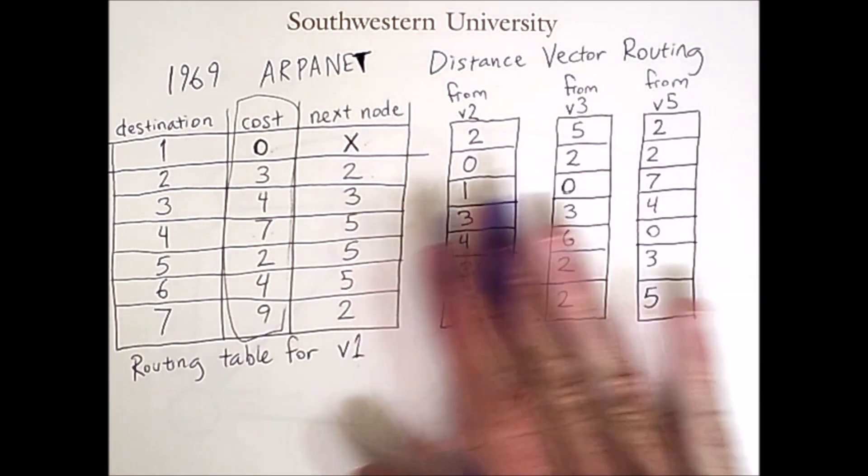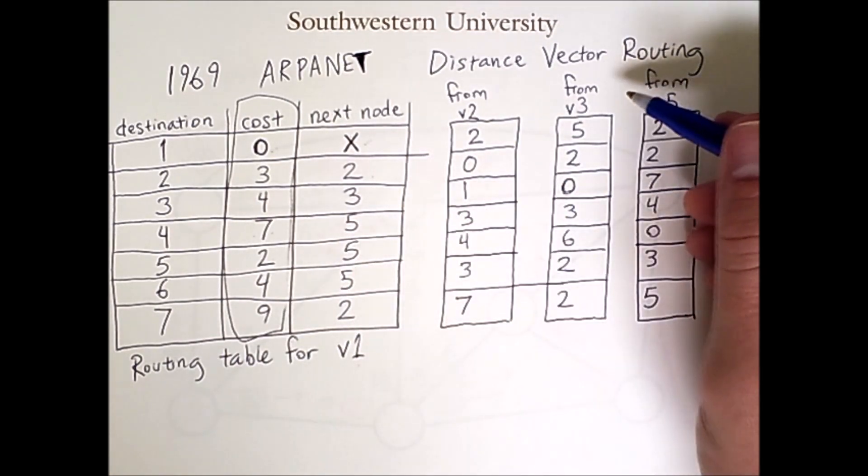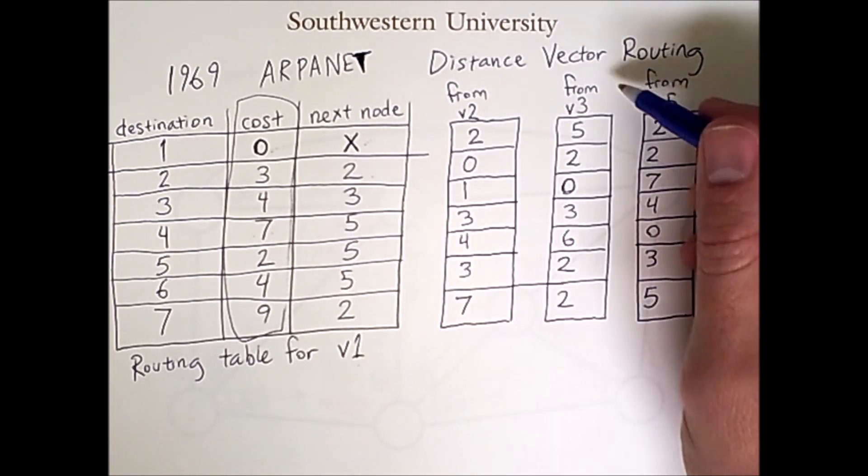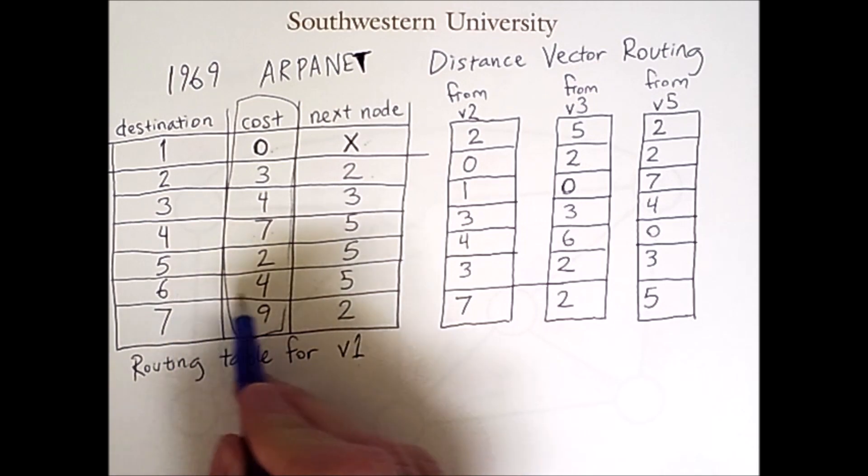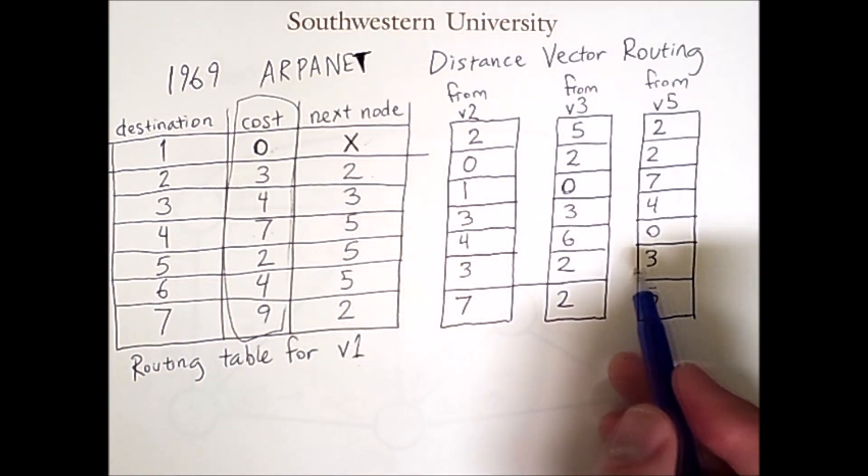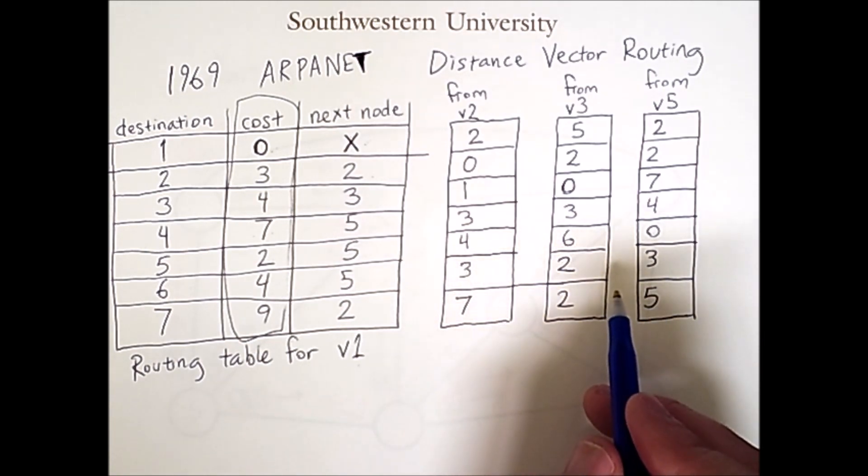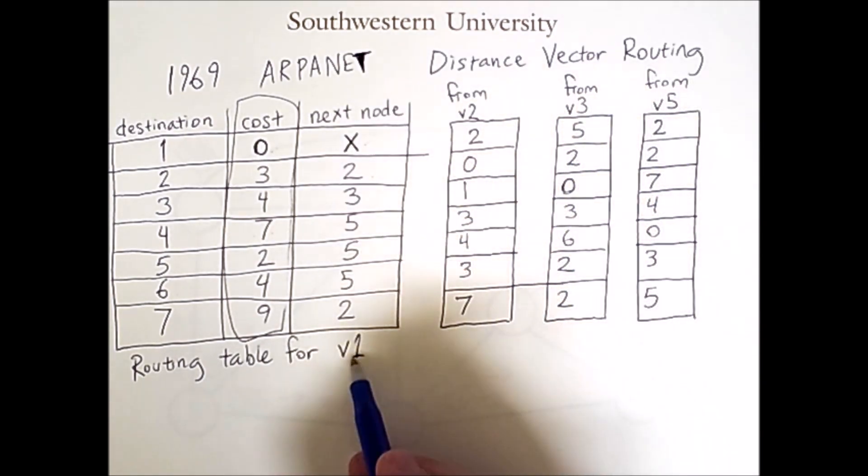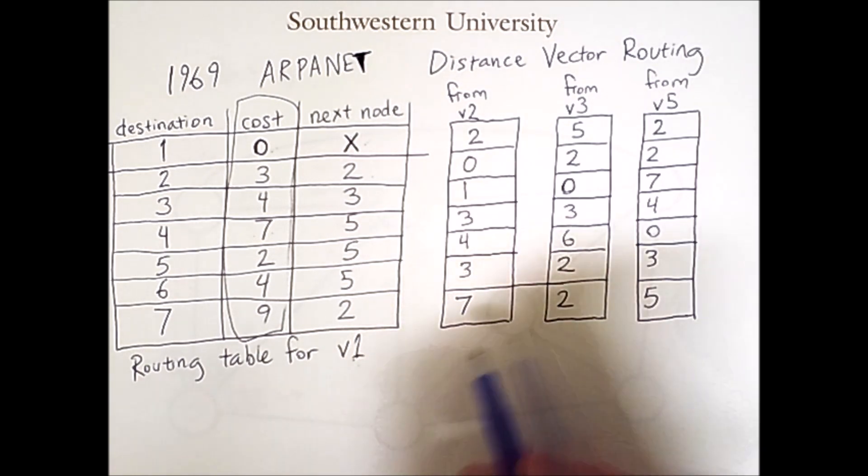So, the way to read this information is, after the packet has already reached this given node, the cost to then reach the given destination is this much more. So, these numbers do not account for the cost to initially reach these nodes from node 1. That information is stored locally by v1 and it has some notion of the delay it takes to reach its neighbors.